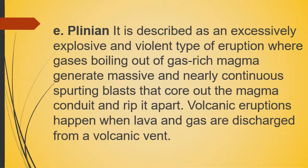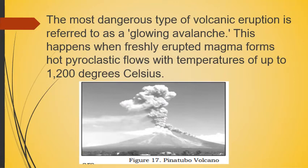E) Plinian: described as an excessively explosive and violent type of eruption where gases boiling out of gas-rich magma generate massive and nearly continuous sparking blasts that clear out the magma conduit and rip it apart. Volcanic eruptions happen when lava and gas are discharged from a volcanic vent. The most dangerous type is referred to as a glowing avalanche, which happens when freshly erupted magma forms hot pyroclastic flows with temperatures of up to 1,200 degrees Celsius.